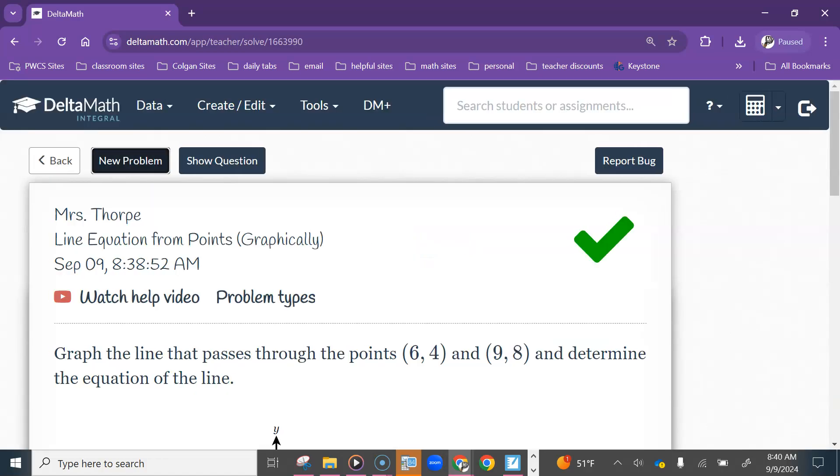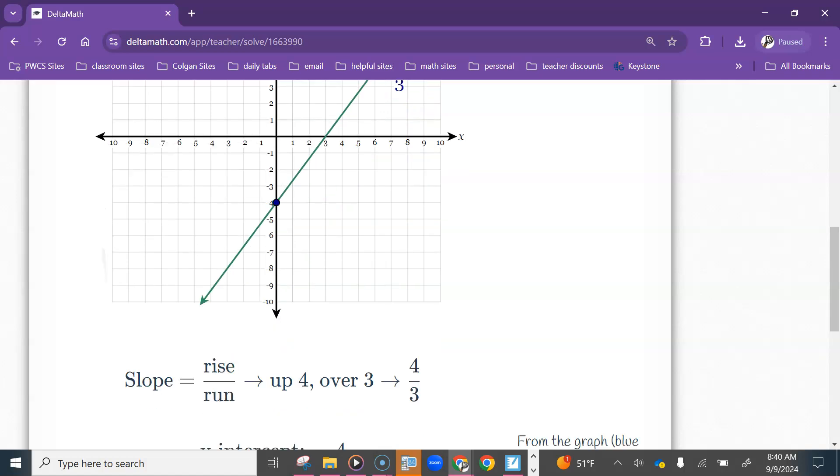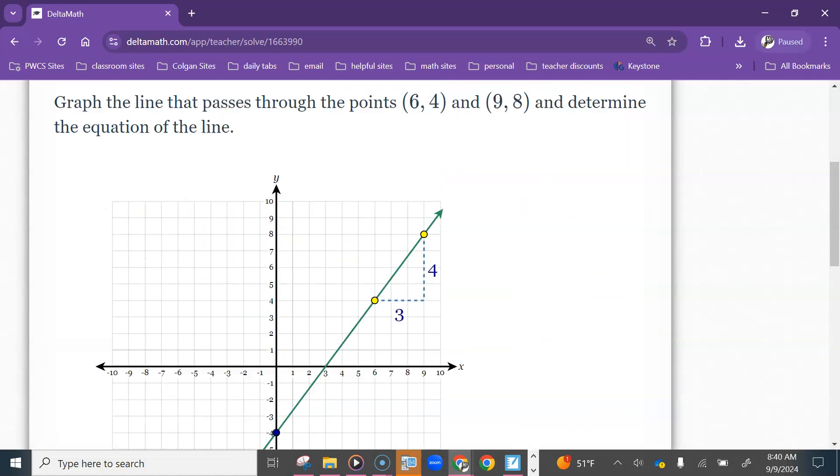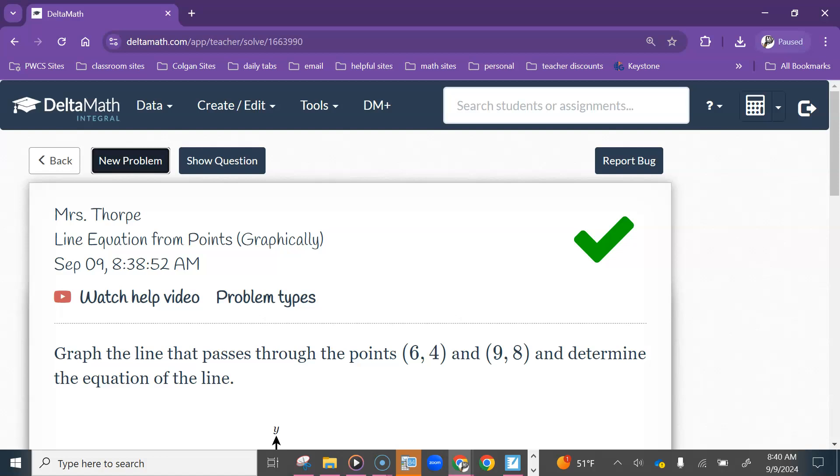So if you get a question like that, make sure you're plotting those points, graphing them correctly, zoom in if you need to. And then if it asks you to write the equation, count that slope, find the y-intercept, and then put that into your equations.